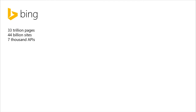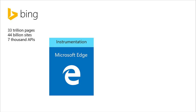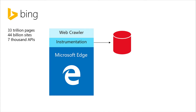We also have Bing, which knows about 33 trillion pages across 44 billion sites, and the browser has over 7,000 different APIs. So we said: why don't we take Edge, wire it up with special instrumentation, and run it inside the actual Bing web crawler nightly? We can store data about what APIs get called, what syntaxes, what markup, what image formats, what video formats — all of it into a database — and use that as a feedback loop back to the product.